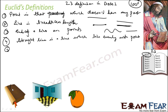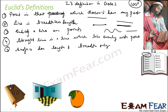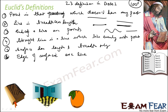He also defined surface. A surface is something which has length and width. He also defined edges — these are the edges — and he said that the edges of the surface are lines. That is the definition: the edges of a surface are lines.